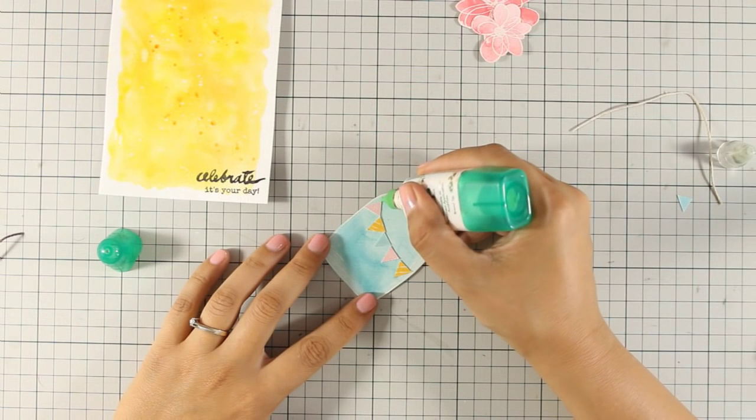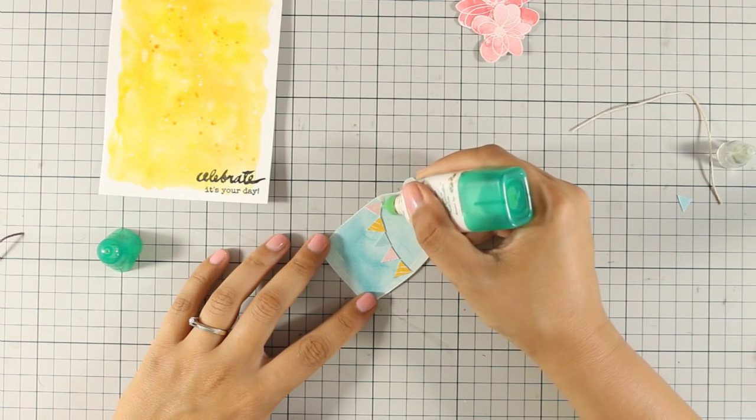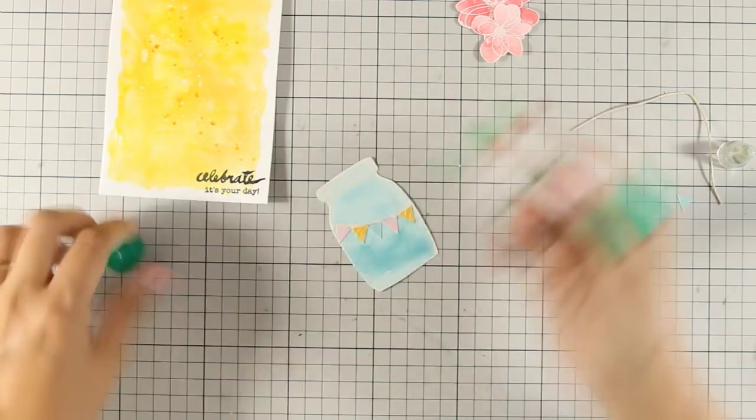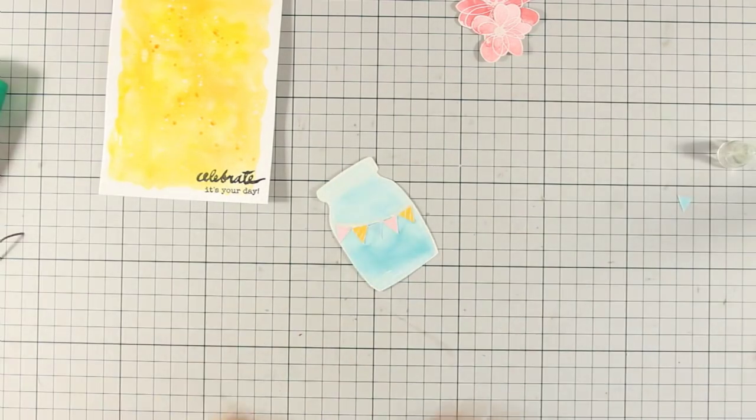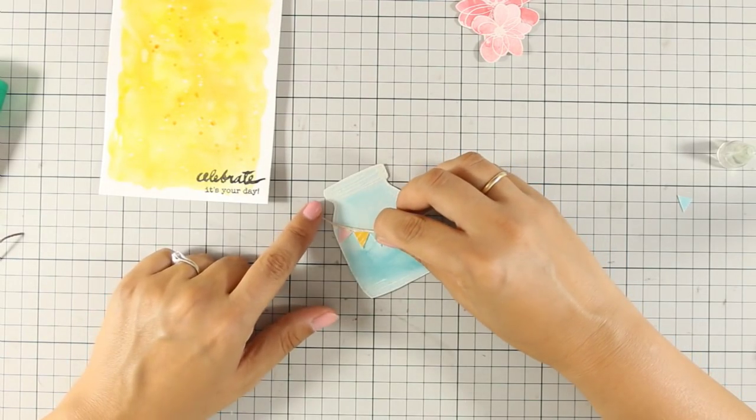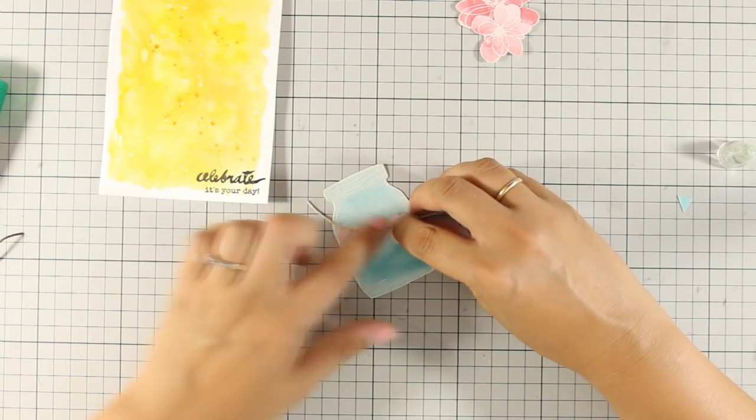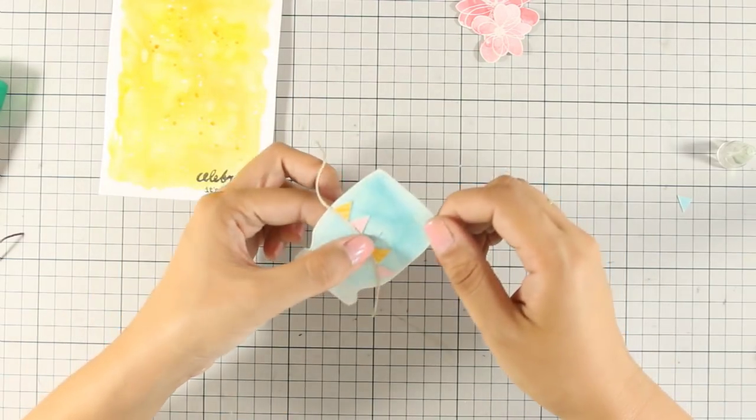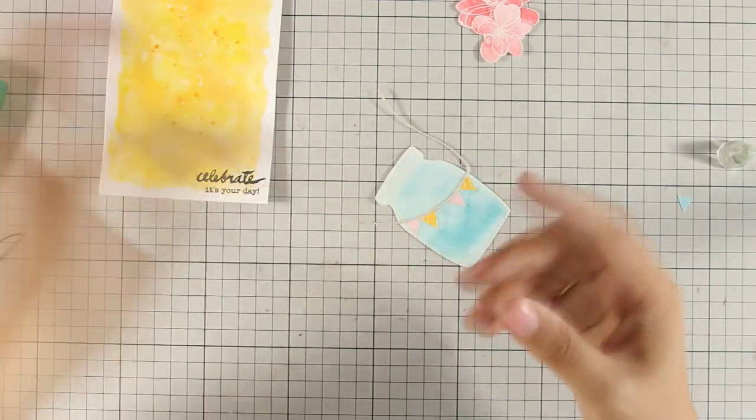I have cut out a piece of thread which I am going to glue just over the triangles to create my banner. To stick down the thread I am using Tombo Mono Multiglue but you can use any type of glue with a fine tip applicator. This thread is going to also cover up the line that I have drawn previously with my pencil.